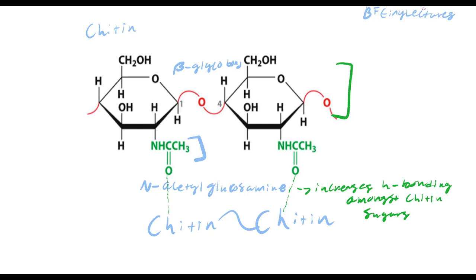Chitin is considered a derivative of cellulose. You could take a cellulose molecule, remove the alcohol on the adjacent carbon, and add an N-acetylglucosamine group — and you have chitin. On the exam, key points are: chitin and cellulose both have beta glycosidic bonds; you can't digest either; and chitin can be created from cellulose by adding N-acetylglucosamine, which increases hydrogen bonding and creates the rigid, firm exoskeleton.